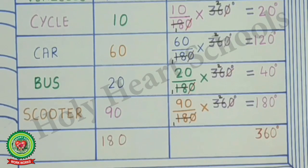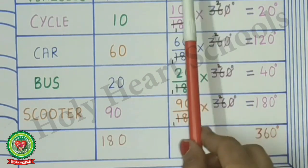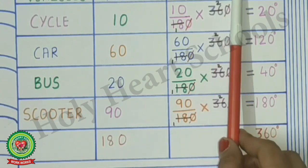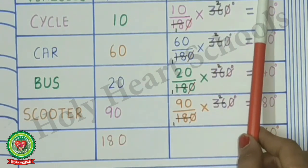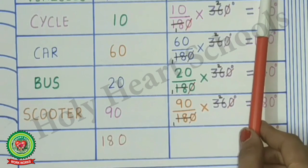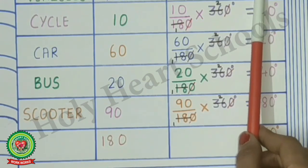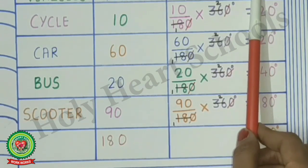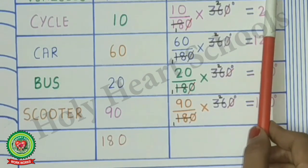To draw a pie graph, first we will find the central angle of a circle. The formula for central angle is: central angle equals given value upon total value, multiplied by 360 degrees. The sum of angles in a circle is 360 degrees, so we will multiply each value by 360 degrees.